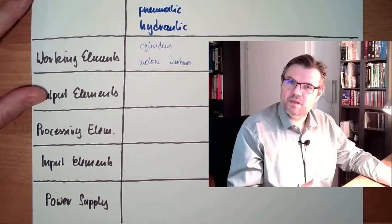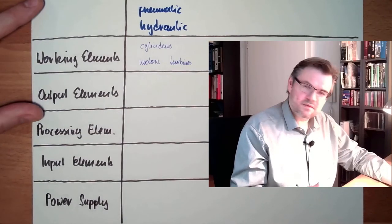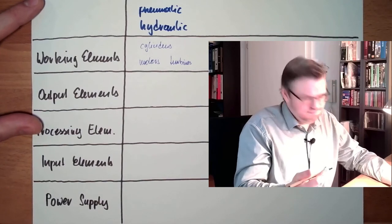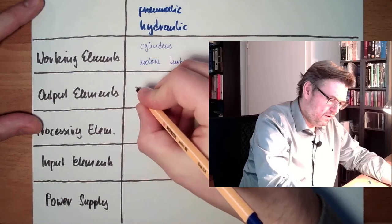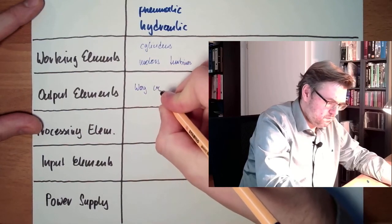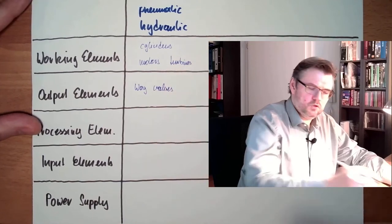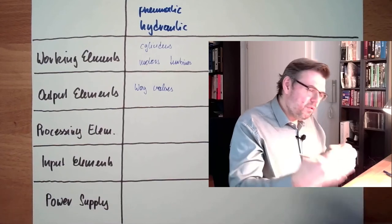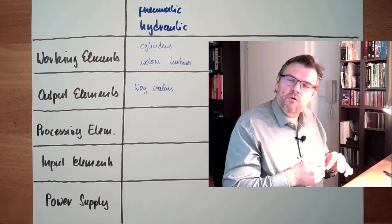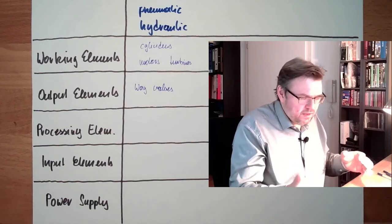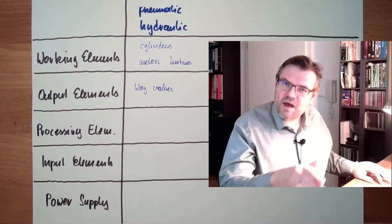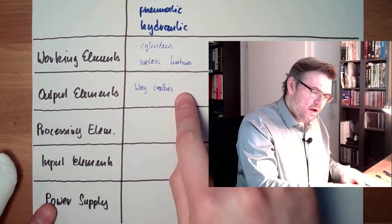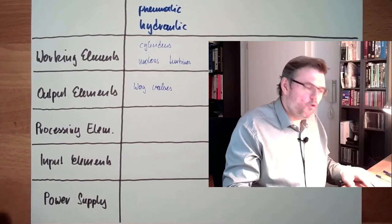These are the working elements. Output elements, typical output elements are way valves. There is hardly more, way valves. A single acting cylinder needs a 3-2 way valve, a double acting cylinder needs a 4-2 way valve or a 5-2 way valve, depending a little bit. If it's pneumatic, usually it's 5-2, in hydraulic, usually it's 4-2. So way valves, big enough, big way valves, big enough to control the working element.